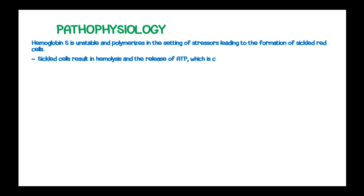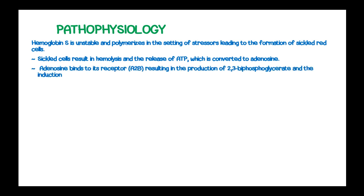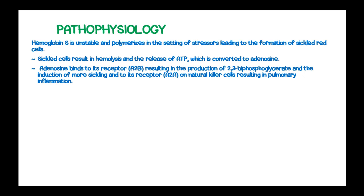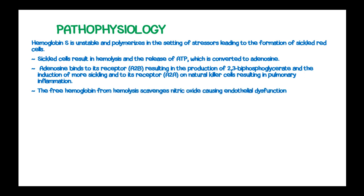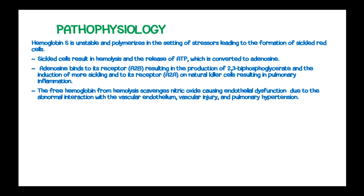Sickle cells result in hemolysis and release of adenosine triphosphate, which is converted to adenosine. Adenosine binds to its receptor A2B, resulting in production of 2,3-bisphosphoglycerate and induction of more sickling, and to receptor A2A on natural killer cells, resulting in pulmonary inflammation. The free hemoglobin from hemolysis scavenges nitric oxide causing endothelial dysfunction due to abnormal interaction with the vascular endothelium, and can lead to vascular injury and pulmonary hypertension.